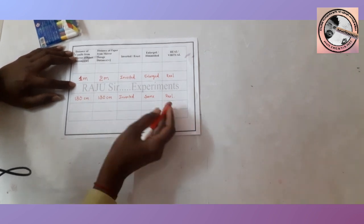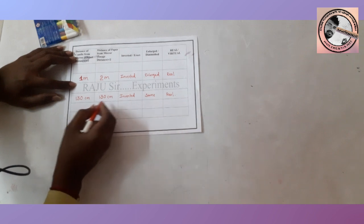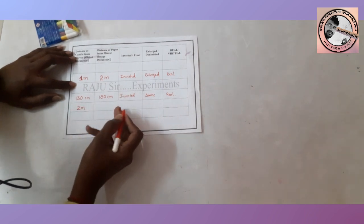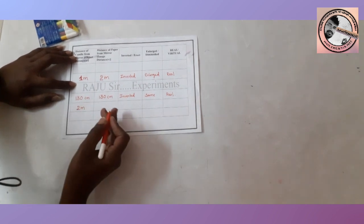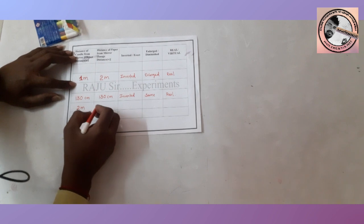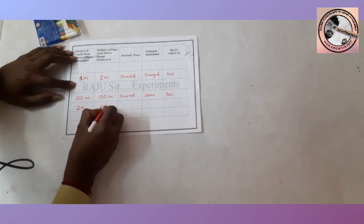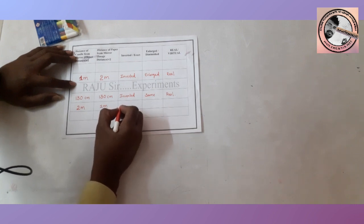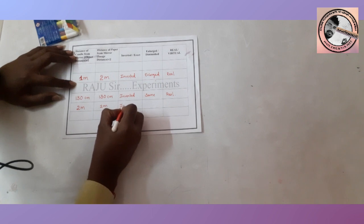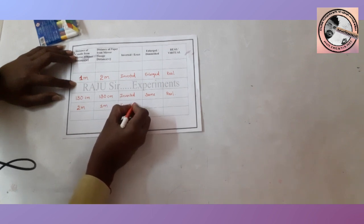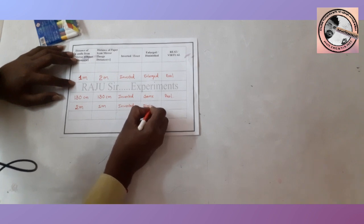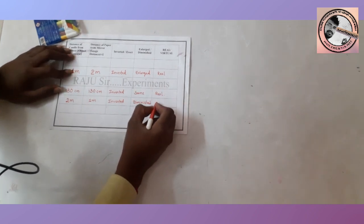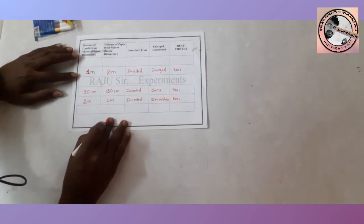The image was same size as the candle flame. It was captured on the paper so the image is real. Next, we shifted the candle further away beyond the center to two meters object distance, adjusted the screen toward the concave mirror, and the image distance was observed at one meter. The image was inverted and diminished, and formed on the paper so it is real.